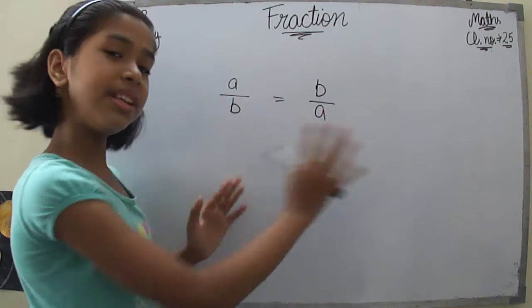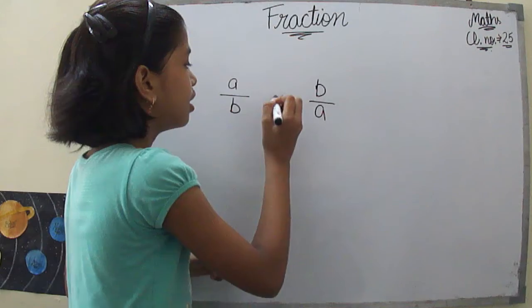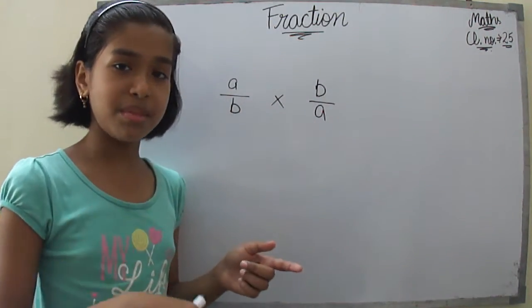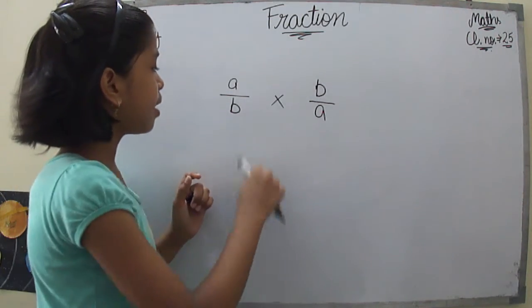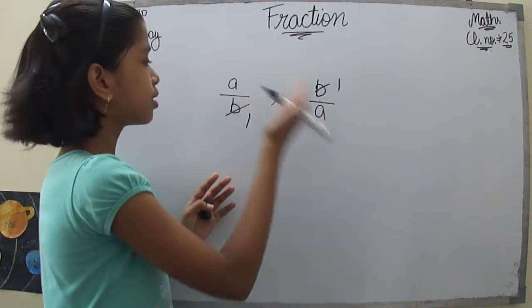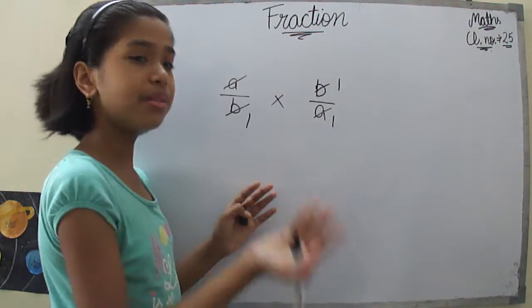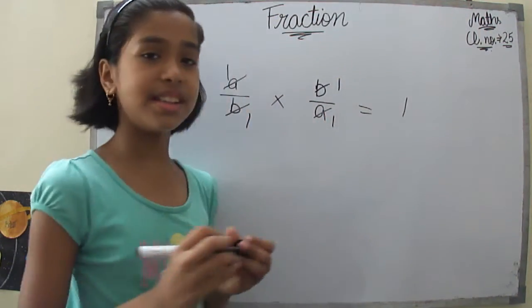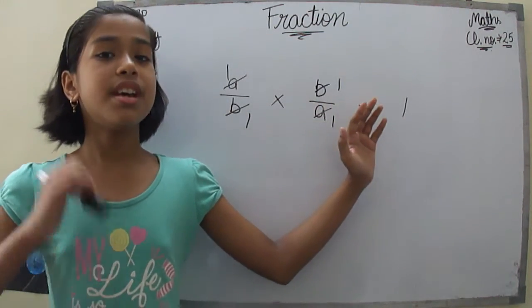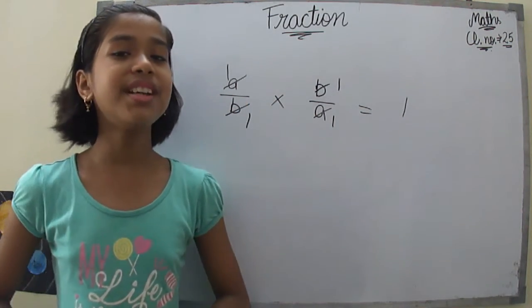Let's verify using variables. If you multiply A upon B by B upon A, the B's cancel and the A's cancel, giving us 1 as the answer. So if you multiply any fraction with its reciprocal, you always get 1.